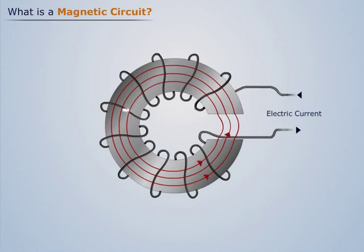This complete closed path followed by any group of magnetic flux lines is referred to as a magnetic circuit. This toroid ring can be considered as one of the simplest forms of a magnetic circuit as the steel ring provides the space in which the magnetic flux is created.